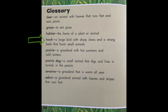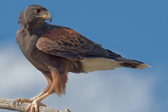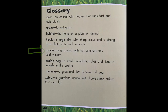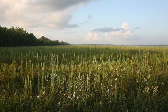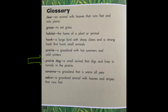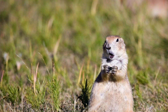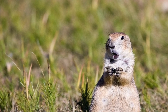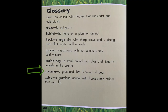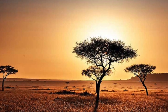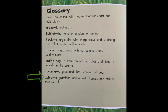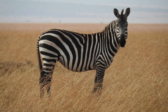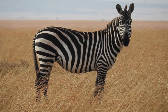Hawk — a large bird with sharp claws and a strong beak that hunts small animals. Prairie — a grassland with hot summers and cold winters. Prairie dog — a small animal that digs and lives in tunnels in the prairie. Savannah — look, that's the type of grassland we're learning about — a grassland that is warm all year. Zebra — a grassland animal with hooves and stripes that runs fast.